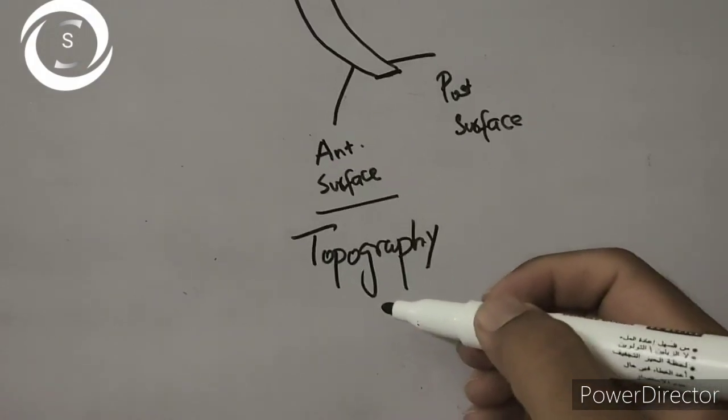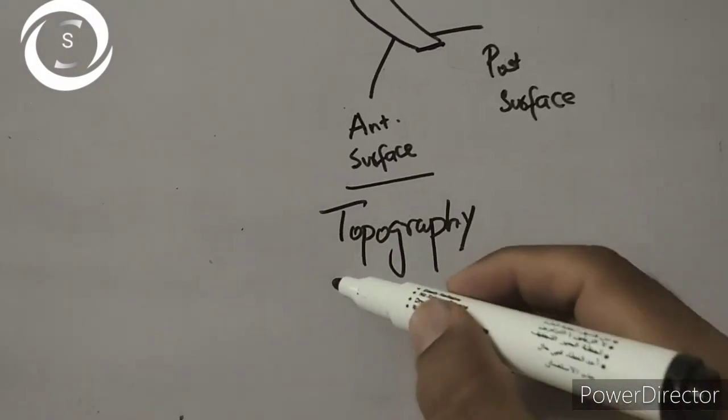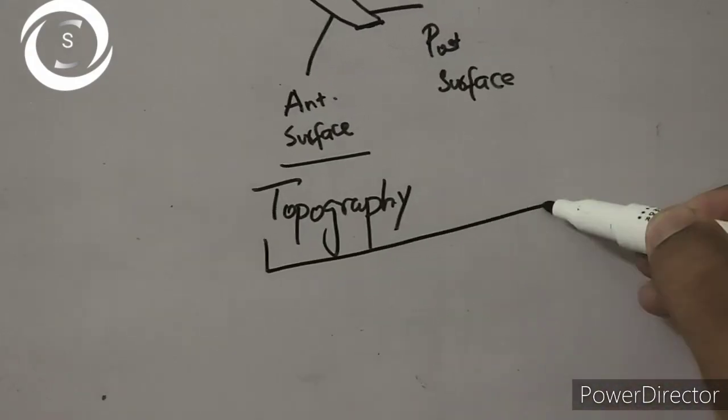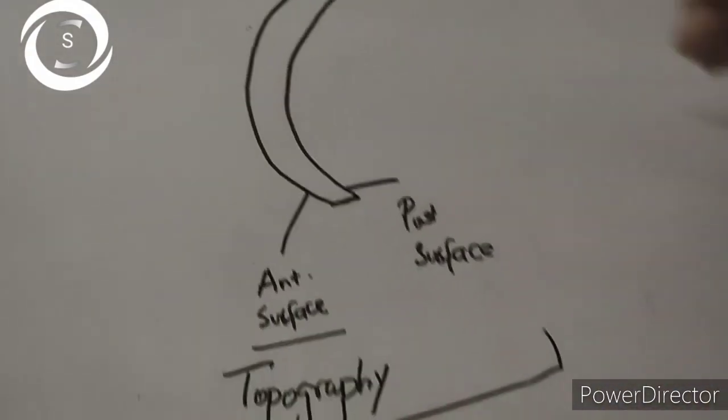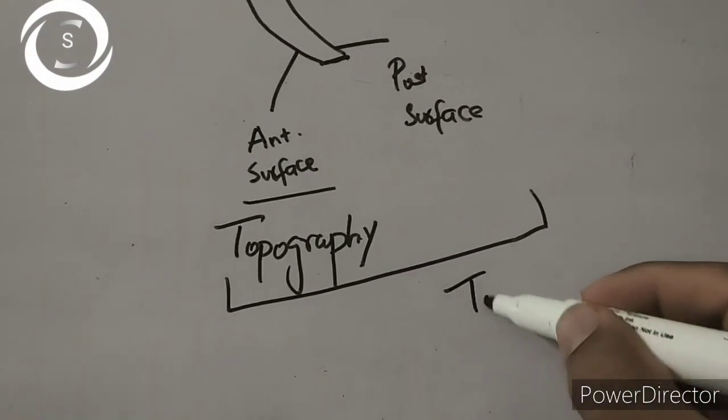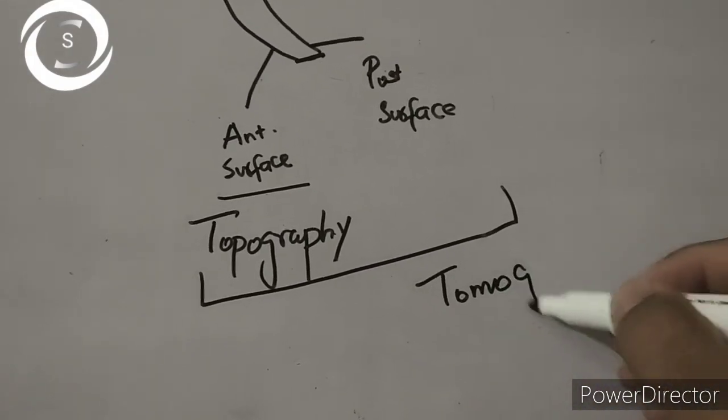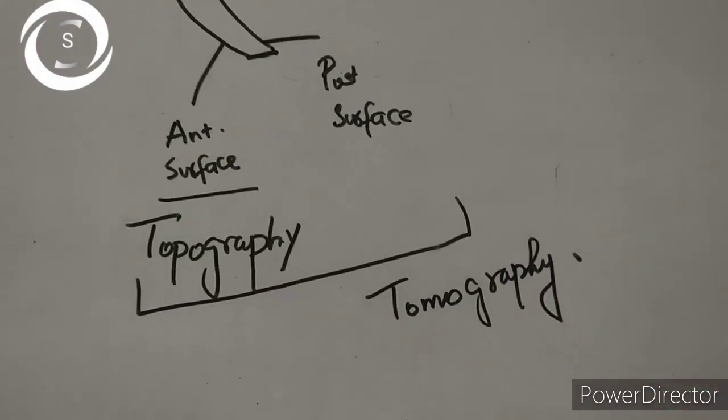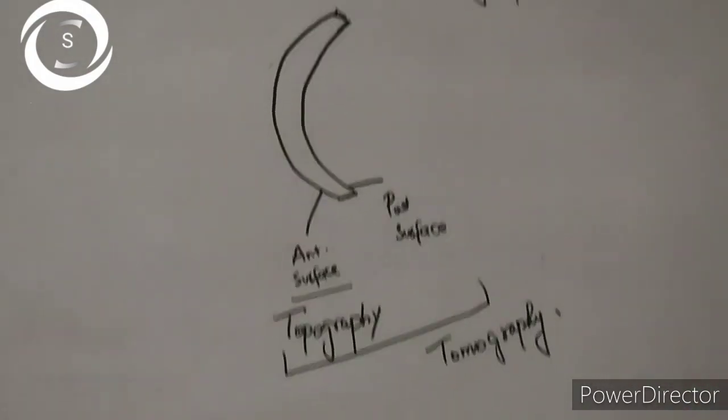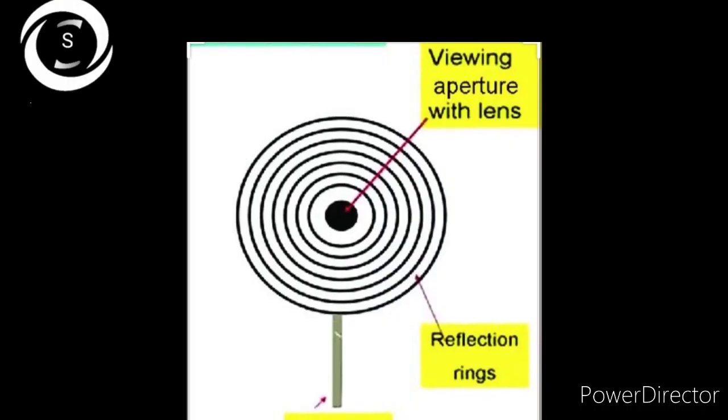The first instrument that was invented to study the cornea was placido disc, and that was based on the principle of first Purkinje image and studied the most powerful anterior surface of the cornea.